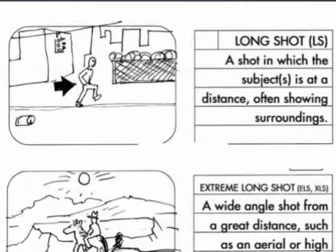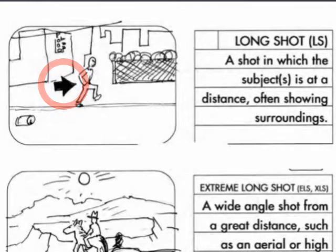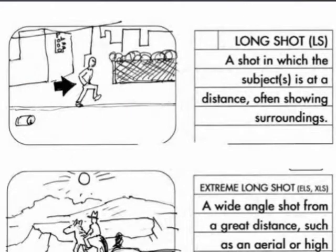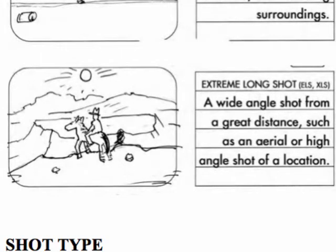A long shot is a shot in which the subject is at a distance and really begins to reveal the surroundings. Long shots are frequently used for establishing shots — not always, but many times. Notice that solid arrow: it means the character is moving, not the camera, so the camera would be set up and the character would enter from the left and exit to the right. An extreme long shot is a wide angle shot from a great distance, such as an aerial or high angle shot of a location. Here, it is usually the environment that is most important; we don't really see the character's features, and sometimes it is used for big crowd scenes or to show a character dwarfed by their surroundings. This is also many times used as an establishing shot.